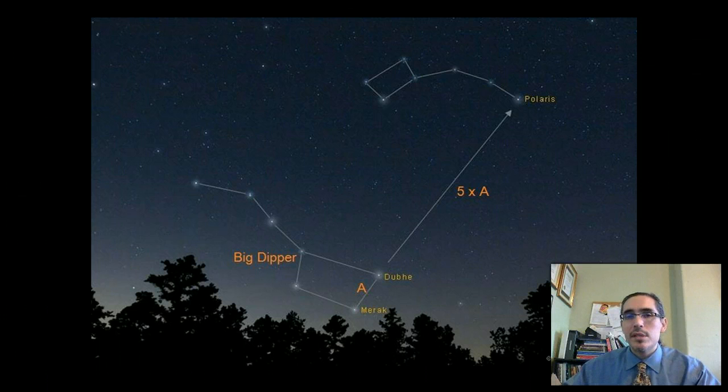The problem is that Polaris is not visible during the day, or during cloudy weather, or if you happen to be in the Southern Hemisphere. So travelers, and especially sailors, needed a better system.